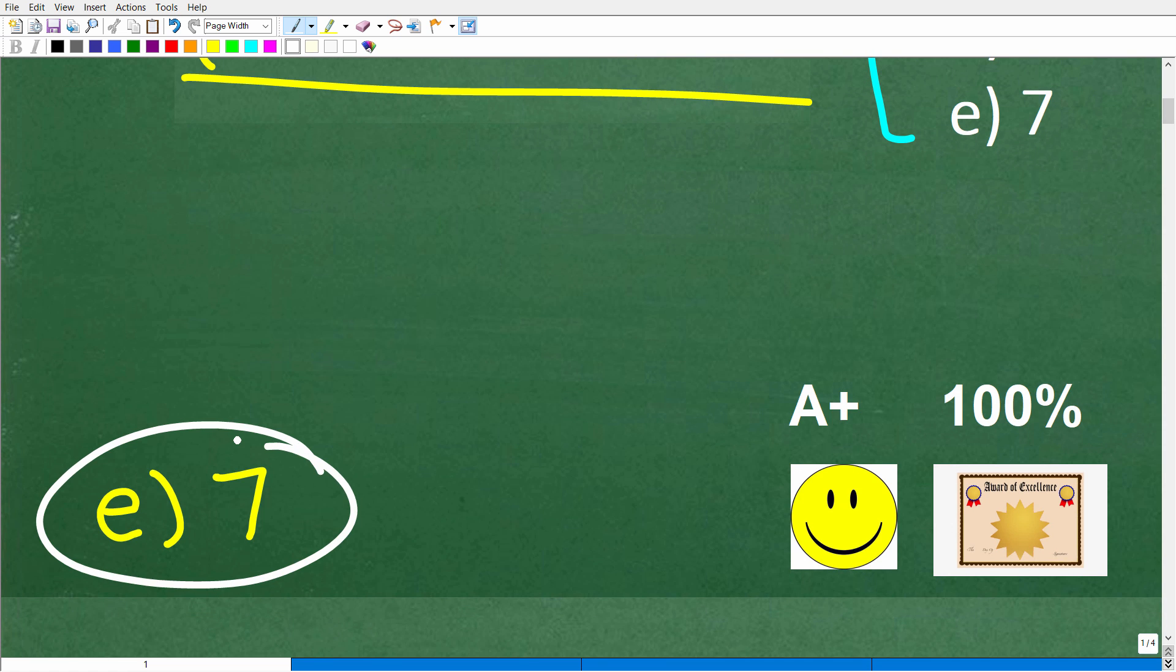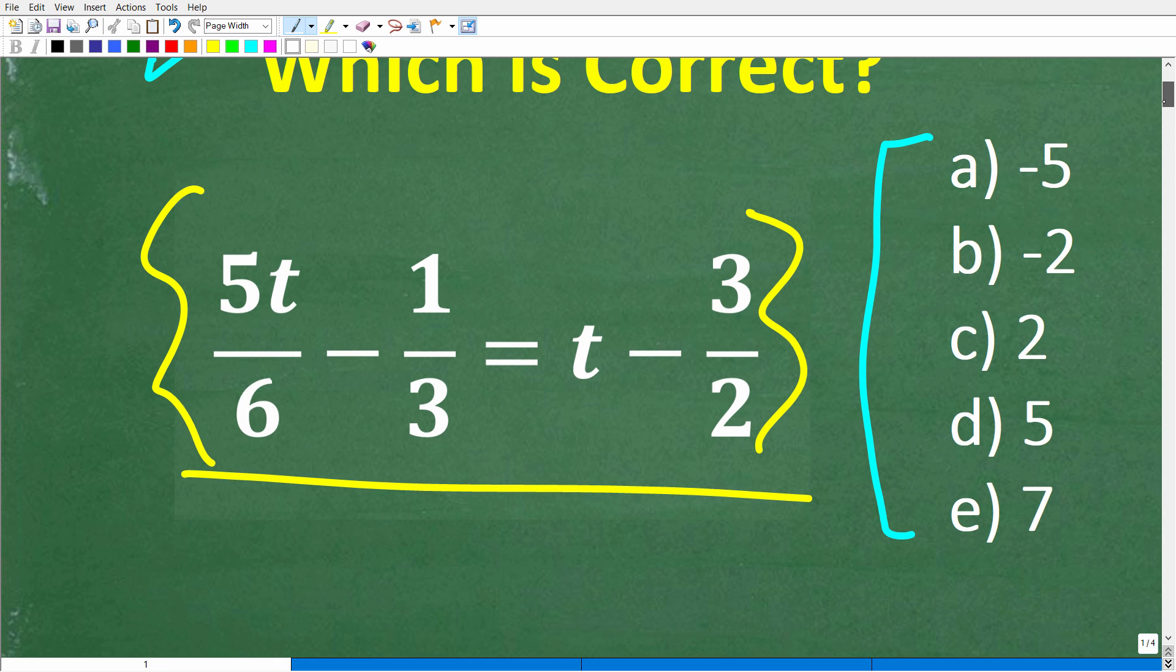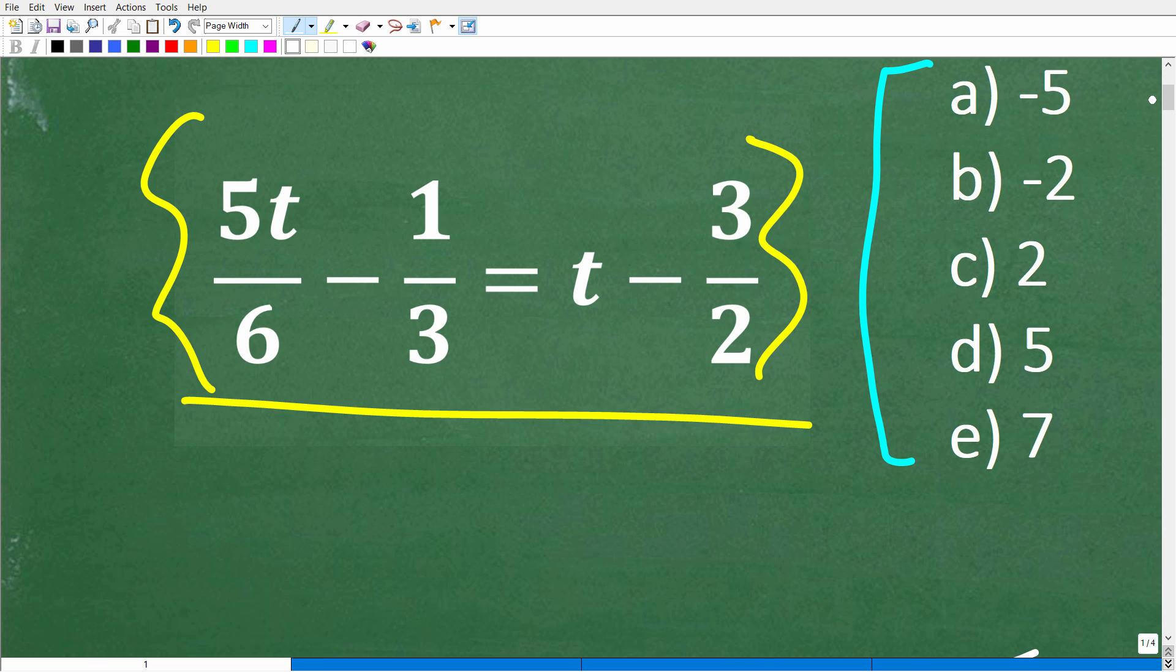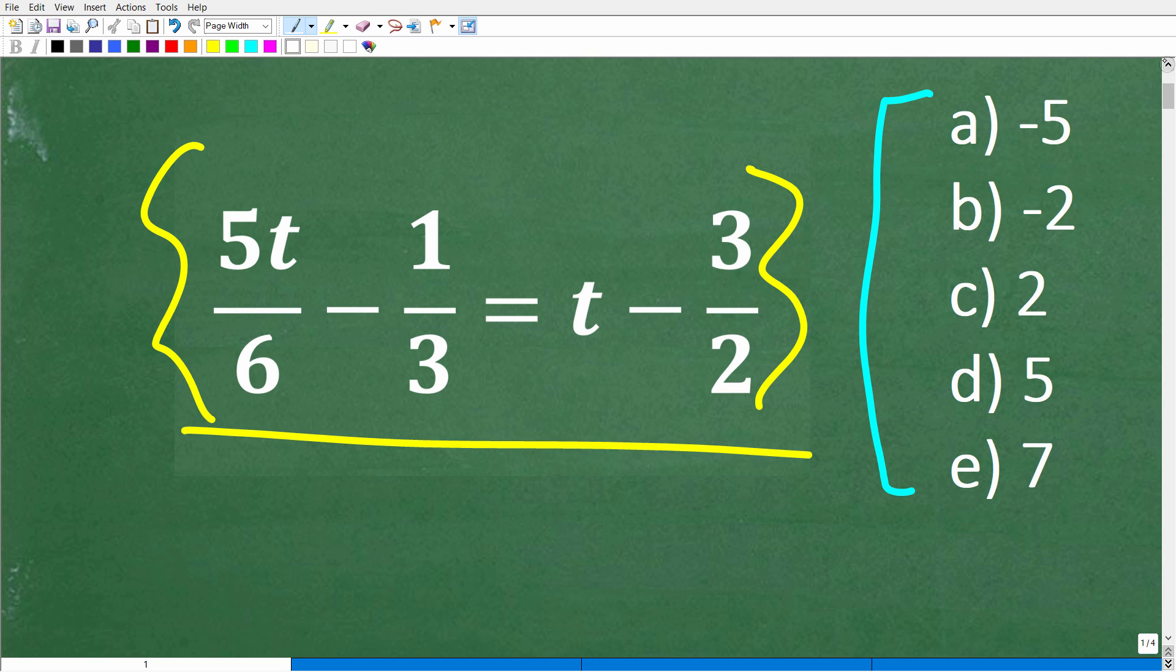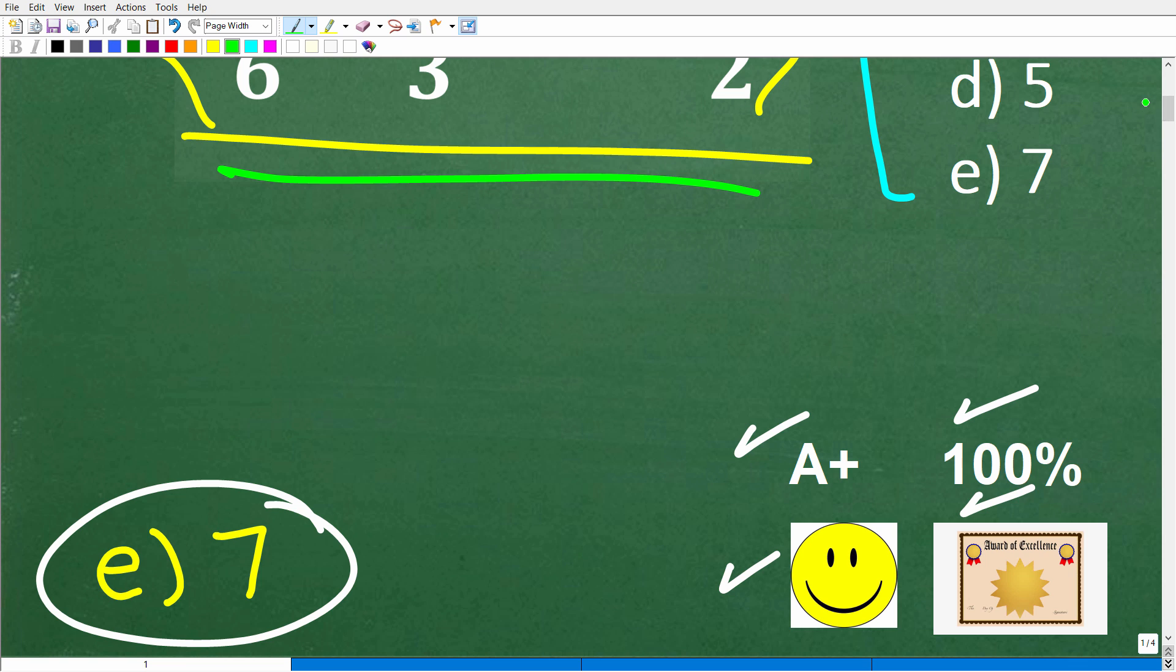The correct answer to this equation is E7. If you got this right, you definitely get a happy face and a plus a 100% and a certificate of excellence because clearly you know how to solve basic rational equations or you are a very astute test taker. You were able to get the right answer. That is even more exciting.